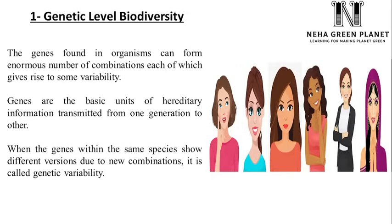These genetic variations are present in other species too. For example, roses are of different colors, and that is possible due to genetic variation. Similarly, rice grains differ in appearance — some are white, some pale white, and some brown. These variations in Oryza sativa (the rice species) occur due to different gene combinations. So gene combinations result in a lot of variations in life form, and these variations are within members of the same species.